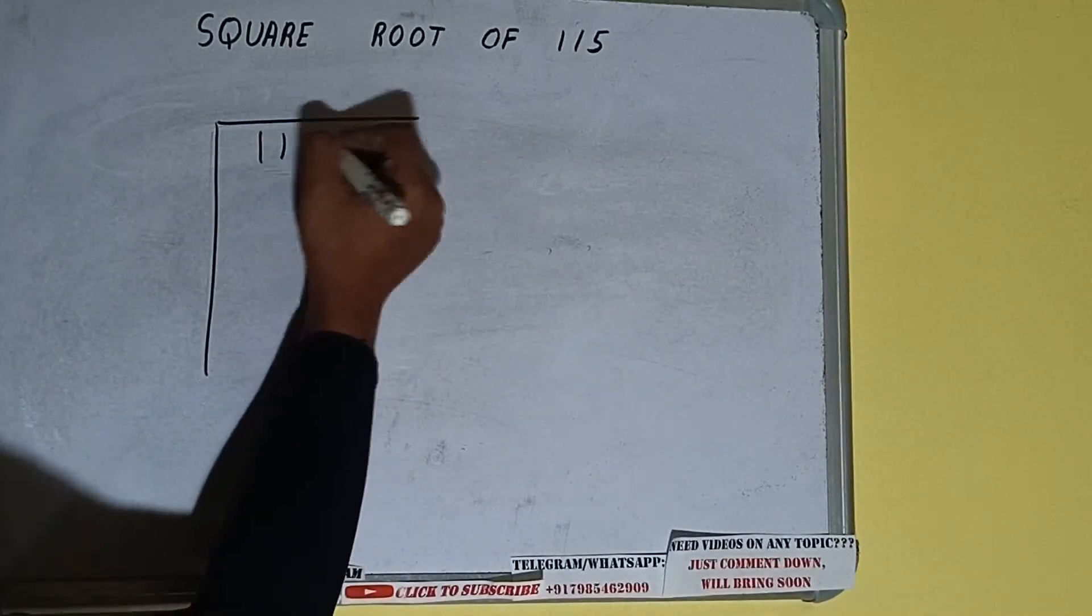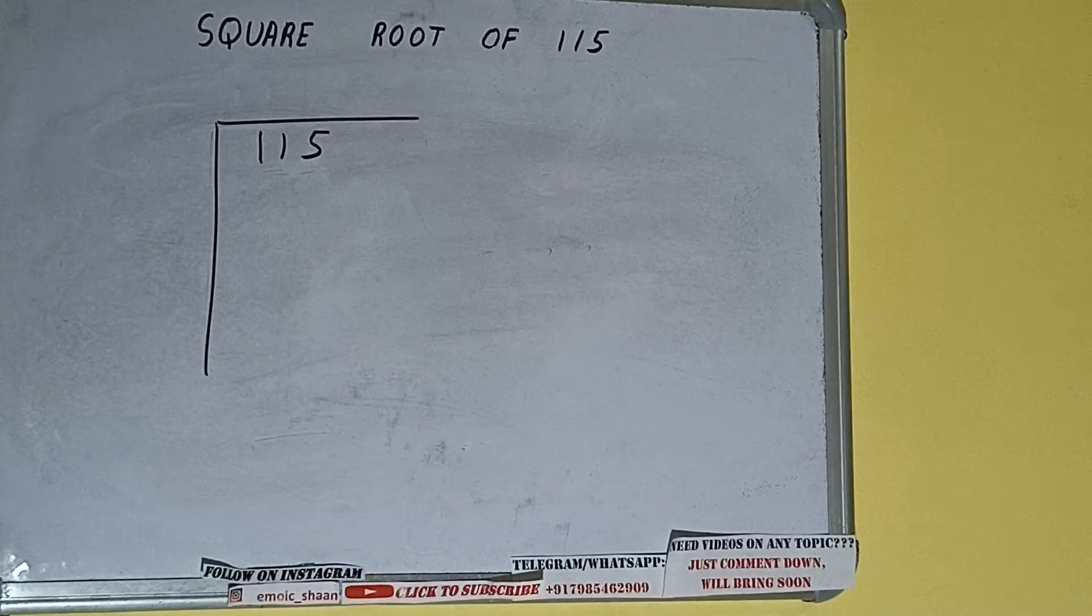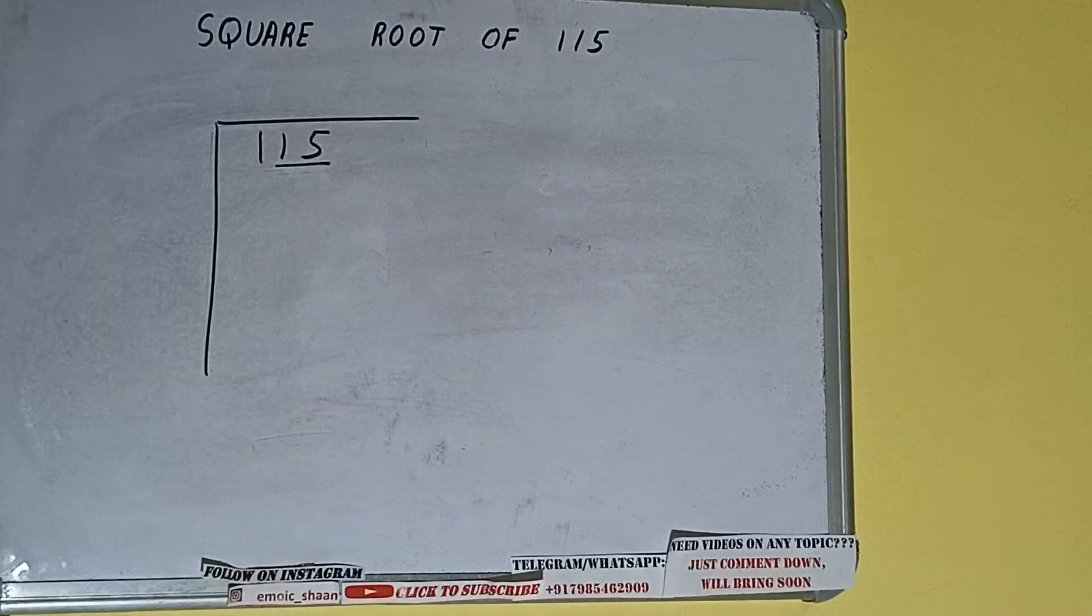First of all we need to write the number like this. The next thing we need to do is form pairs from the right-hand side. So one pair will be this and this one will be left out. So first we'll divide this one and then we'll bring down the pair.